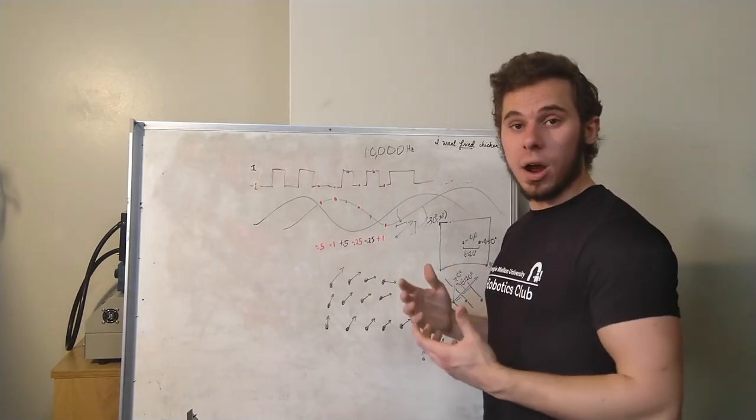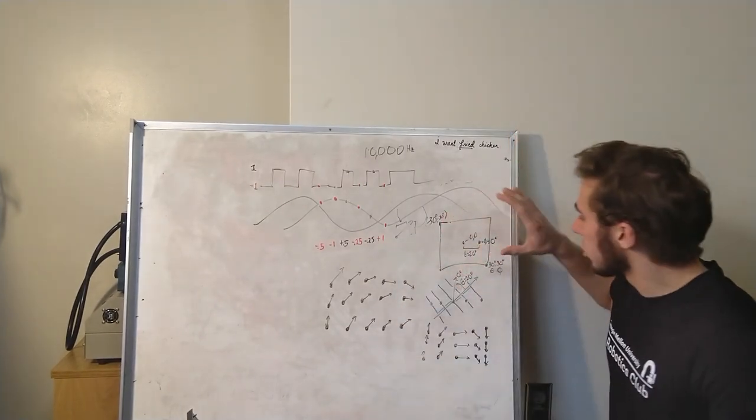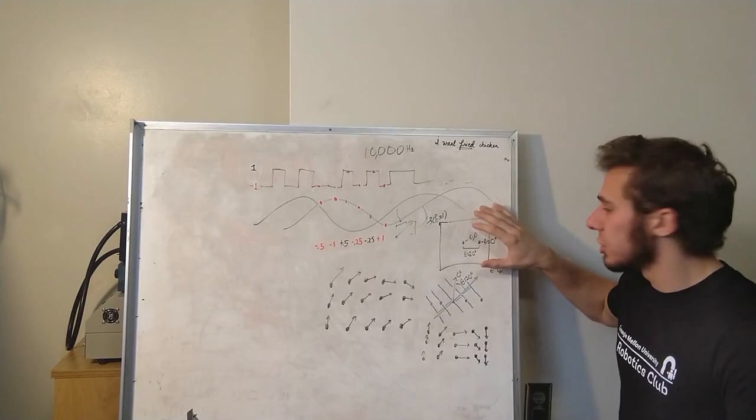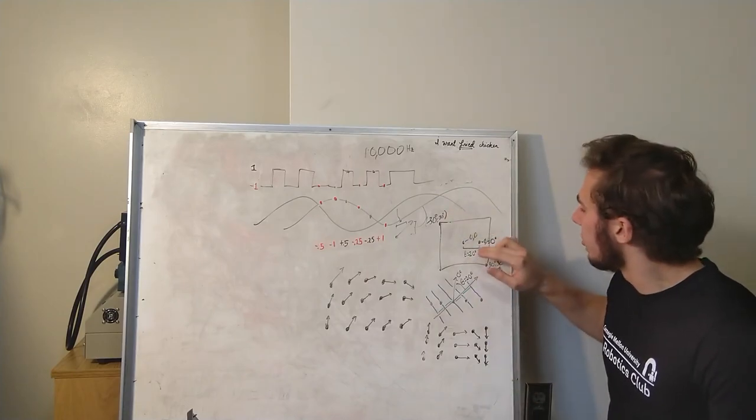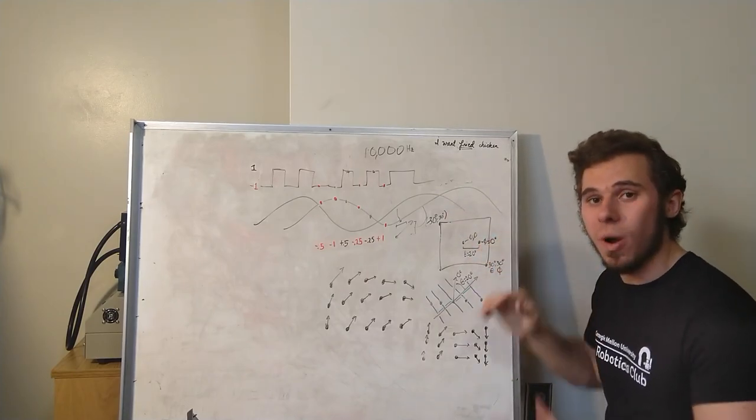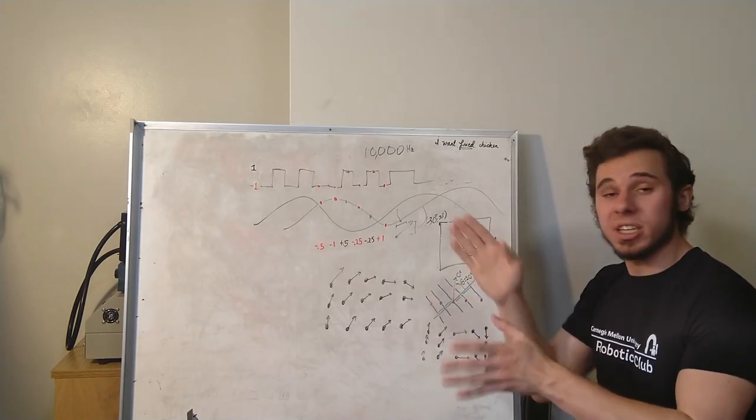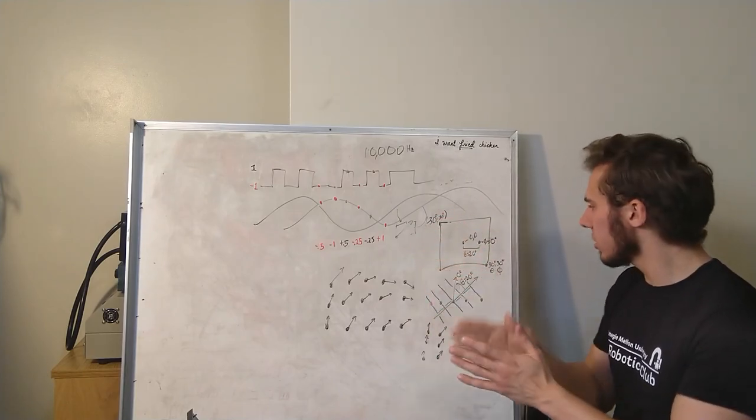So to then generate our actual image, we first look at the resolution of our image and the field of view of our image to figure out for each pixel what angle of arrival do we expect the sound to come from. So in this case, a pixel, say here in the image, might correspond to 20 degrees in x.